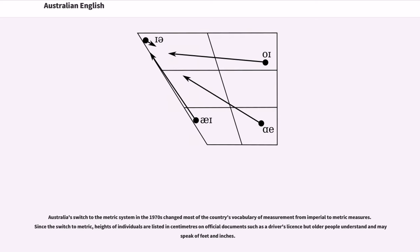Australia's switch to the metric system in the 1970s changed most of the country's vocabulary of measurement from imperial to metric measures. Since the switch to metric, heights of individuals are listed in centimeters on official documents such as a driver's license but older people understand and may speak of feet and inches.